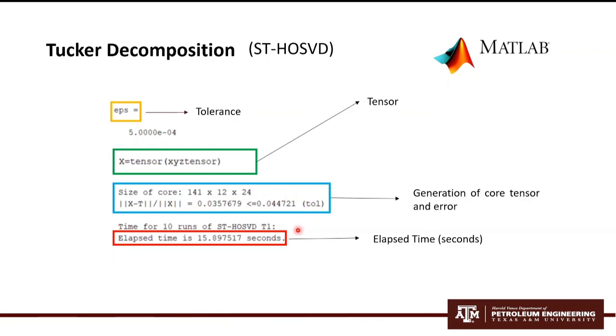And finally, the elapsed time associated with the HOSVD. It's important to mention that the generation of the core tensor is basically a low-rank tensor that is going to approximate my data, so the reduced form of it.